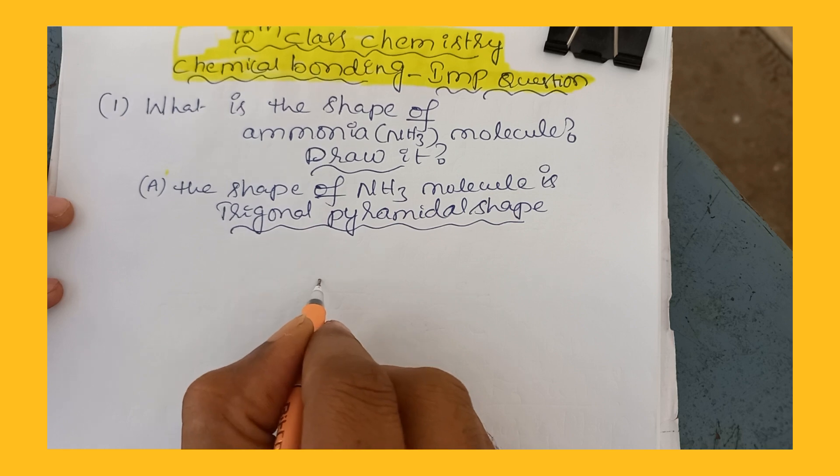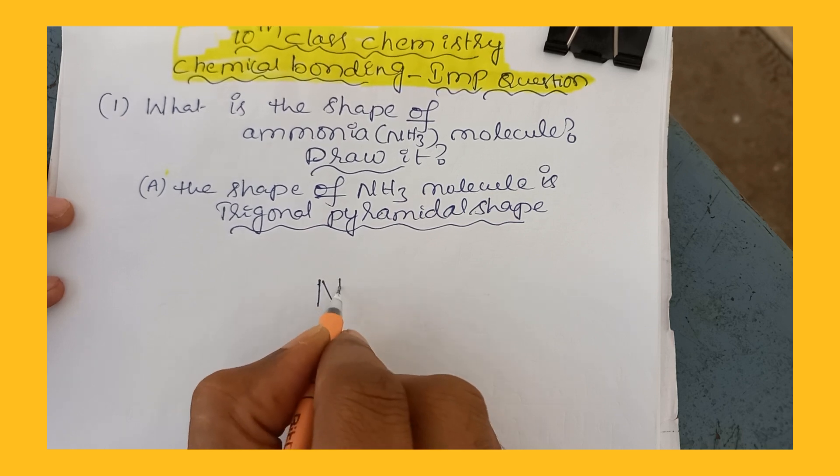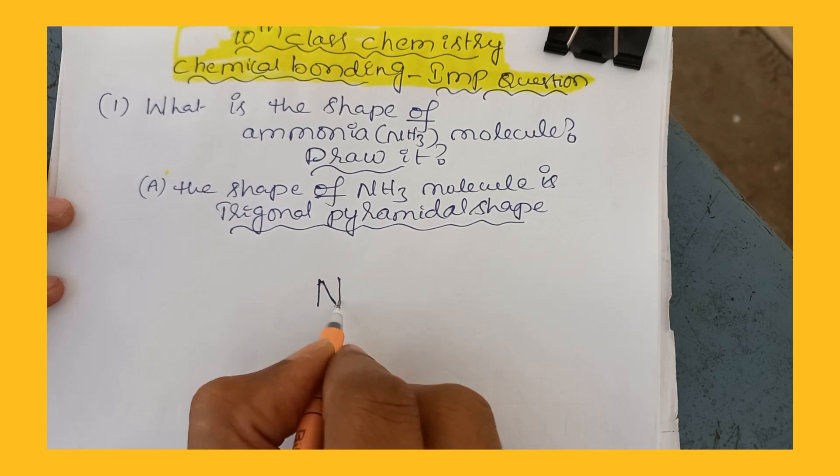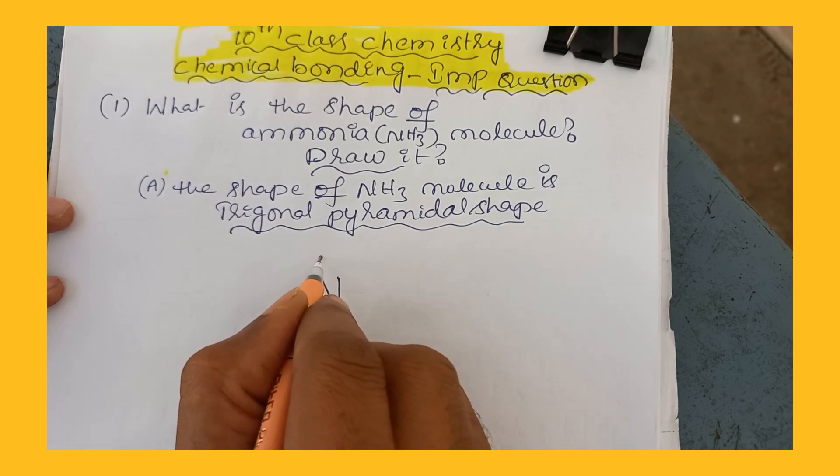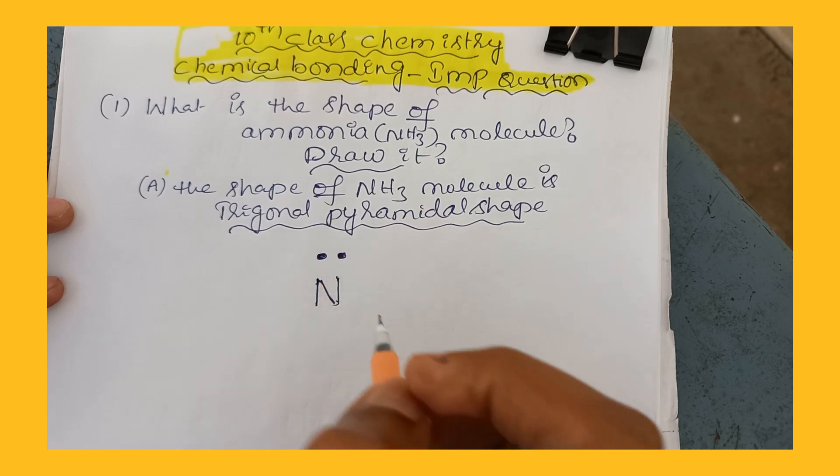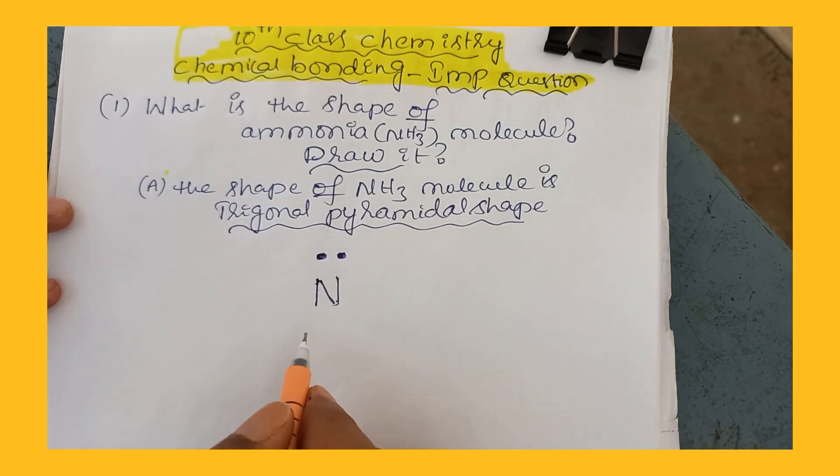In ammonia molecule, nitrogen is the central atom, so its symbol is written at the top. So in ammonia molecule, on nitrogen there is one lone pair of electrons, so we should draw it carefully. This is how we draw the diagram.